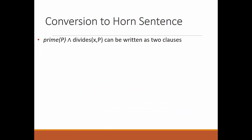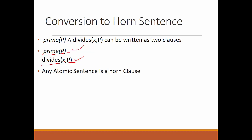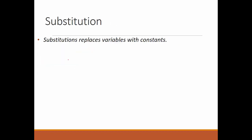If we have a conjunction of two sentences, we can represent each part separately. For example, 'prime(p)' is represented separately, and 'x divides p' is represented separately. These separate atomic sentences are each horn sentences.